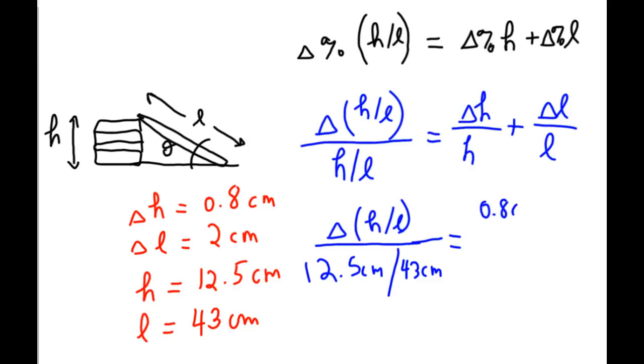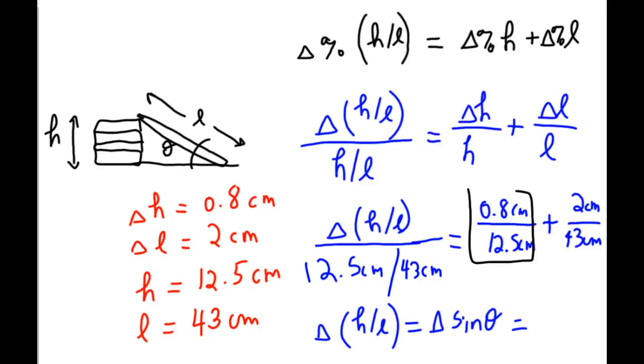Got to include units in our sample calculations. And then delta L is 2 centimeters, and we divide by the value of L, which is 43 centimeters. So, to find the uncertainty in H over L, which equals the uncertainty in sine theta, I have to calculate this value, add it with this value, and then I have to add the two together and multiply the sum by this.